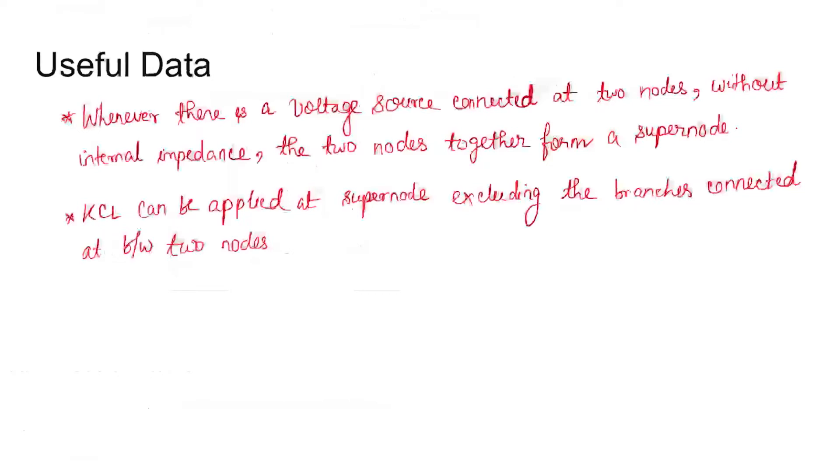Because then we cannot calculate the current flowing in that voltage source, because there is no internal impedance of that voltage source. So the KCL can be applied together at the super nodes, that is considering both the nodes comprising of that voltage source, excluding the branches connected in between the two nodes.